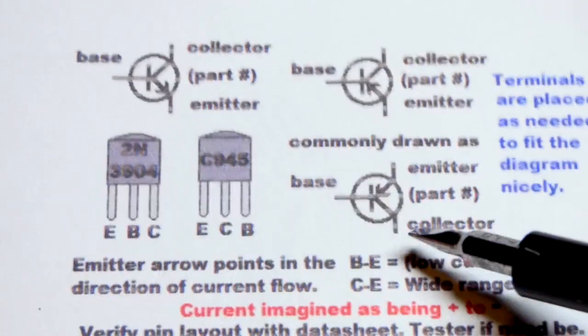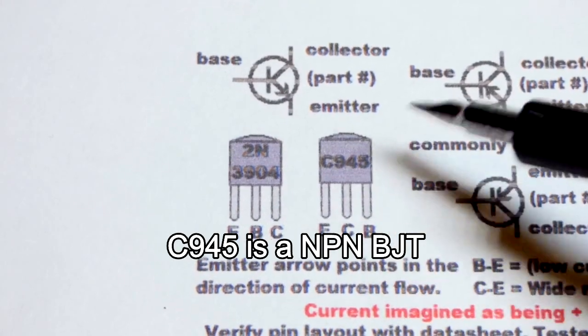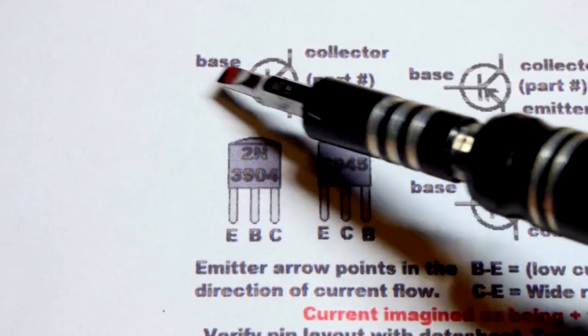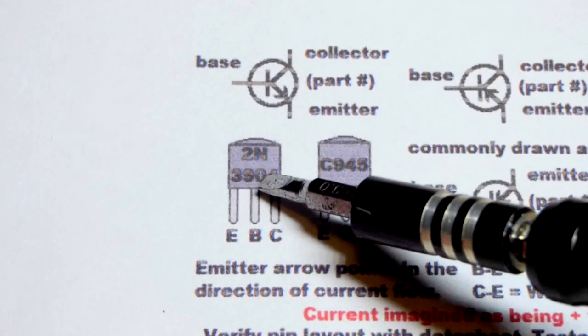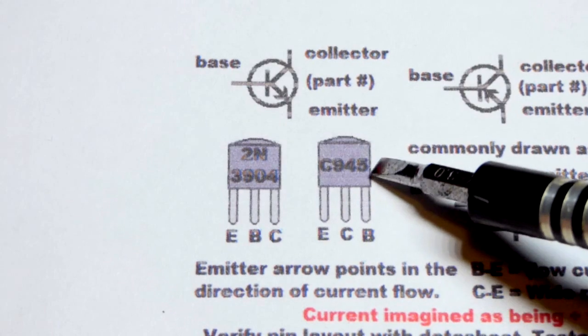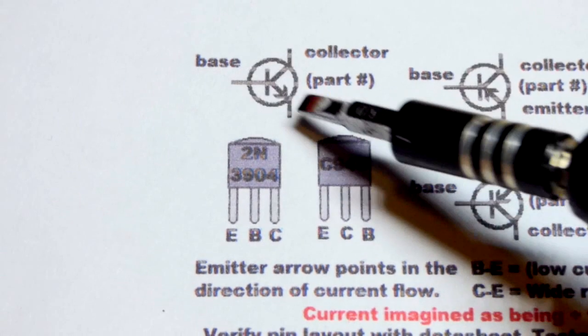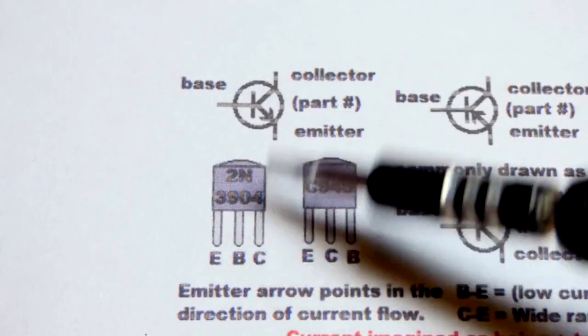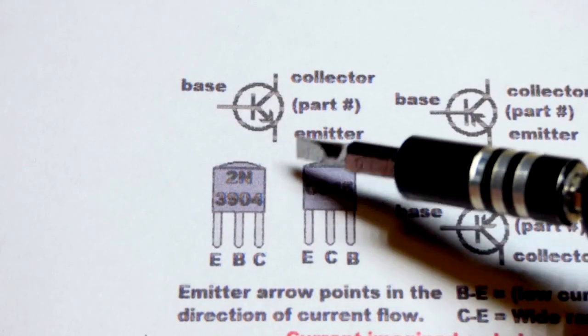We have to take the schematic diagram. Let's go with the NPN. When you have a component, let's say going to the base, then you need to look at which pin is the base. So looking at the flat side, you put it to the middle pin for the 2N3904, and for the C945, you put it to the pin on the right when you're looking at the flat side right there. So that's what you would connect the component to. Same thing with the collector. Whatever component is going to the collector there, you look at the connection point and you connect it to the right pin there or the middle pin for that transistor. Pretty straightforward.